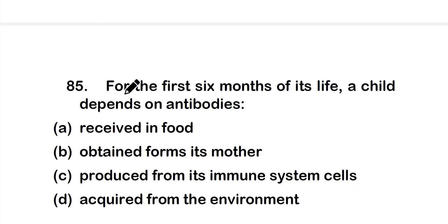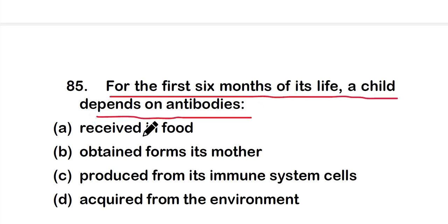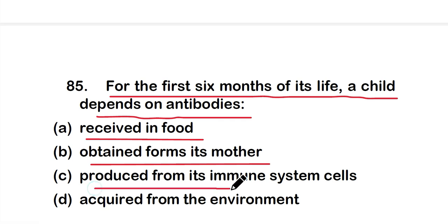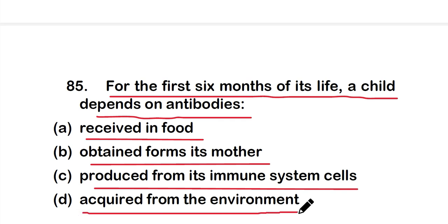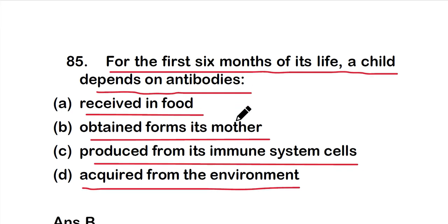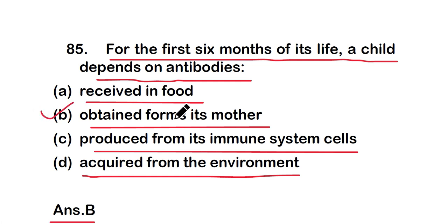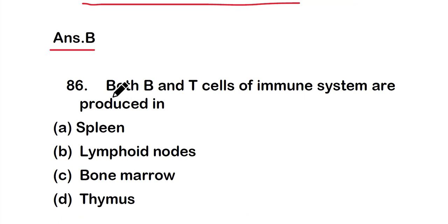Question number 85: For the first six months of its life, a child depends on antibodies that are — option A: received in food, option B: obtained from its mother, option C: produced from its own immune system cells, or option D: acquired from the environment. The right answer is option B — obtained from its mother.